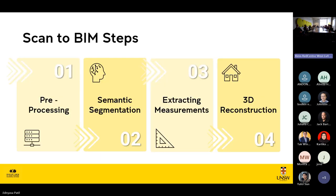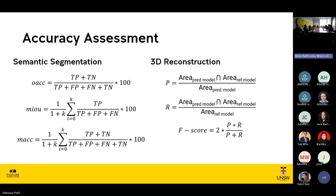After the 3D reconstruction process, there is an important step: accuracy assessment. This takes place at two steps — first at the semantic segmentation step, and next at the 3D reconstruction step. In semantic segmentation, there are three metrics: overall accuracy (OA), mean intersection over union (mIoU), and mean accuracy (mAcc).